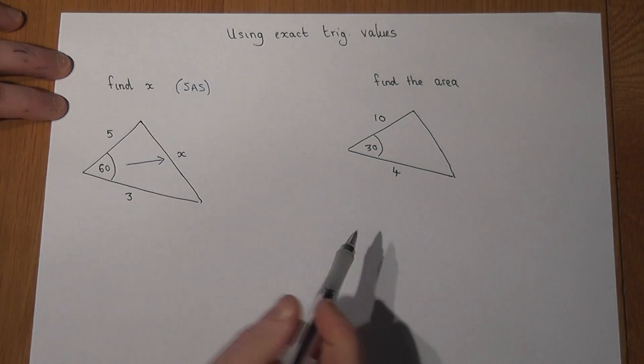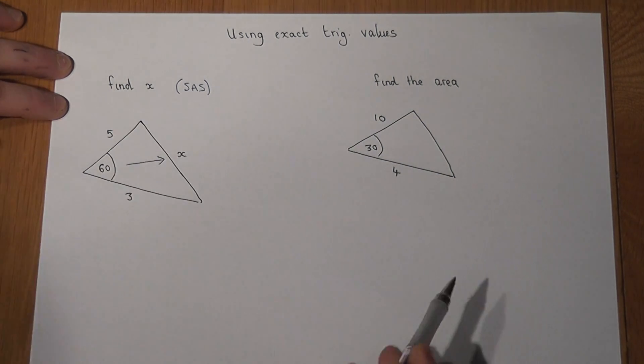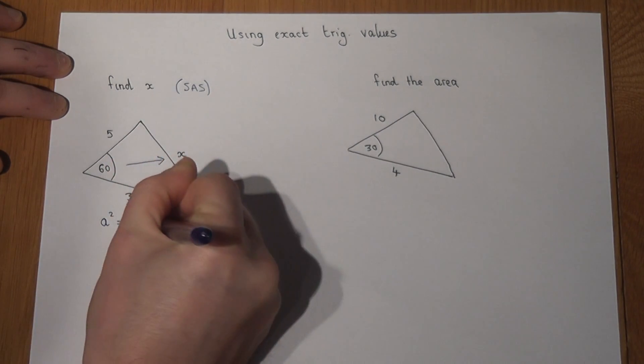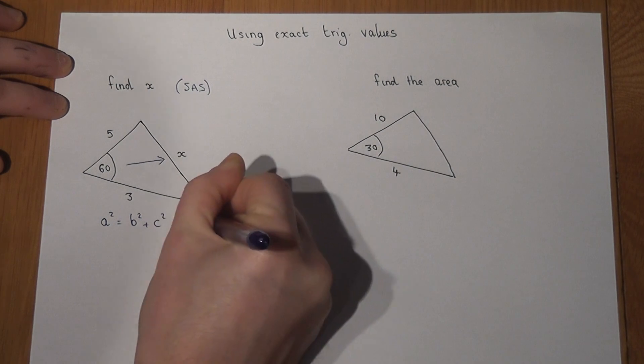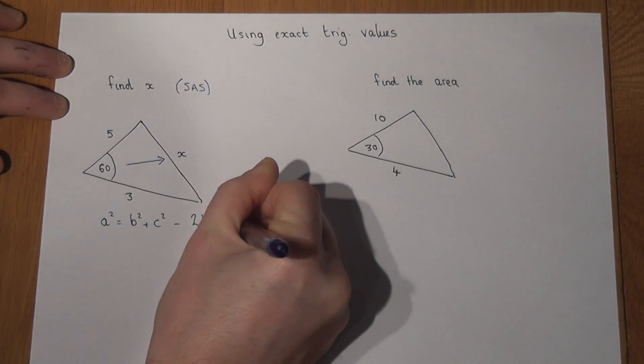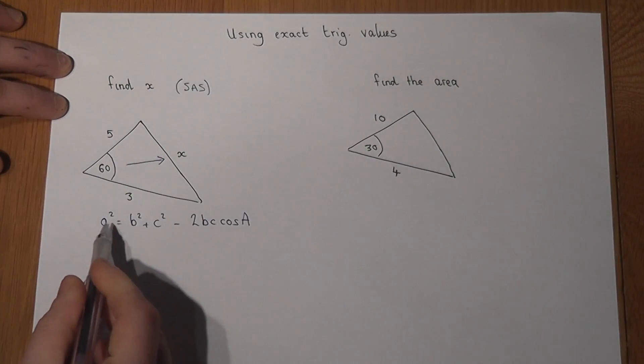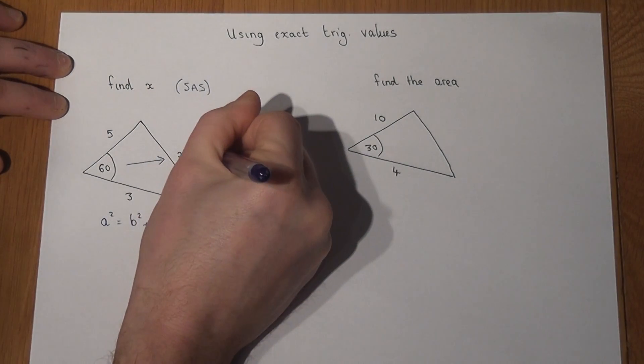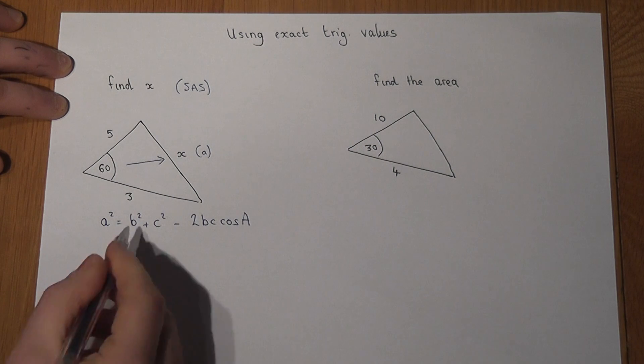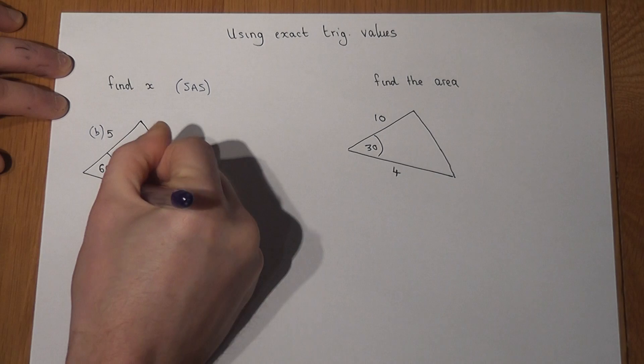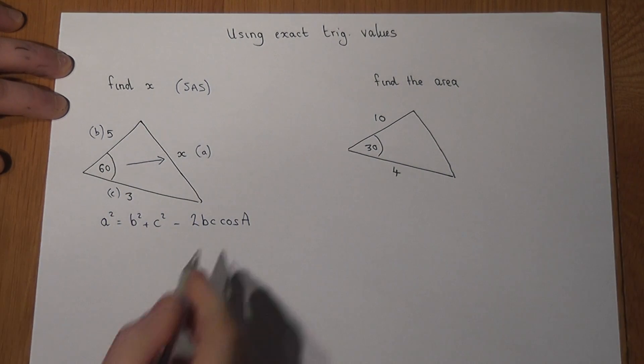There's a key rule we use to find missing sides when we know side-angle-side in any given triangle, and this is called the cosine rule, which tells us that a² equals b² plus c² minus 2bc cos A, where a is the side you want to find, b and c are the other two sides in any order, and big A is the angle we're given.